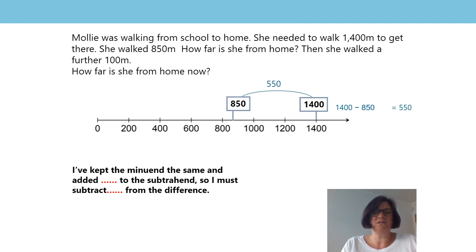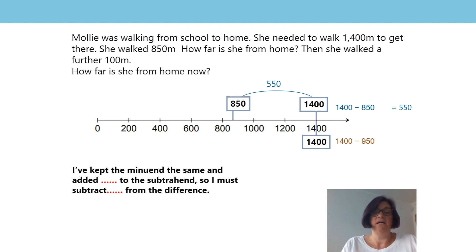She then walked a further 100 metres. I know that if the minuend stays the same, when I add to the subtrahend, I must subtract the same amount from the difference — because that's what we learned with Mrs Grimes in the last lesson. She's walked a further 100 metres, so my subtrahend increases by 100 to 950.